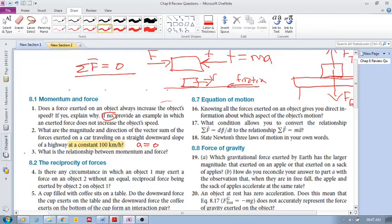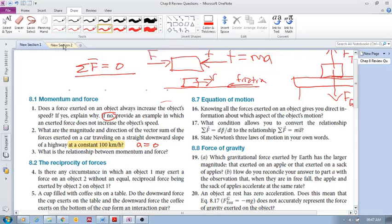Number three: What is the relationship between momentum and force? Momentum and force. Okay, what is the relationship? Please again, try these on your own. So the relationship is the sum of the forces in vector form is equal to dp/dt. So it's the time rate of change of your momentum.